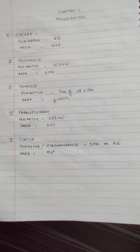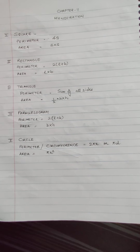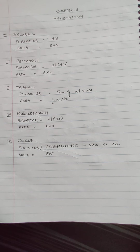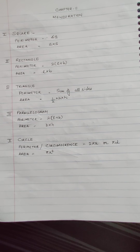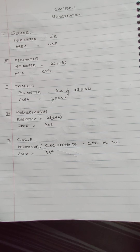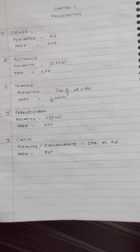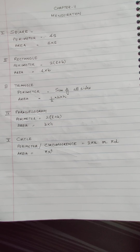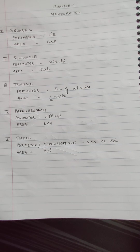Hello students, we are going to start with a new chapter — Chapter 11, Mensuration. That is what we have seen in our previous classes, 6th or 7th standard: the perimeter and area concept, that is mensuration.